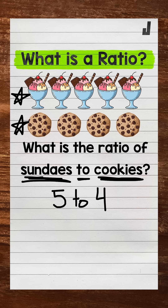Now, please keep in mind, like I mentioned earlier, order matters. This has to be five to four — sundaes to cookies — because that's the ratio we needed here. Having four first and five second, so four to five, would be cookies to sundaes, and that's not what we wanted. So keep that order in mind.